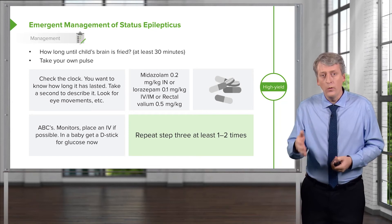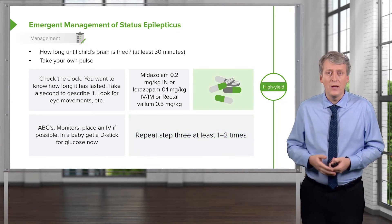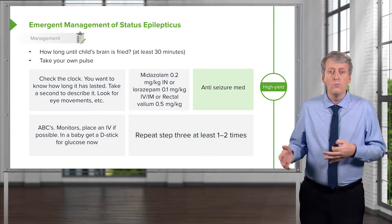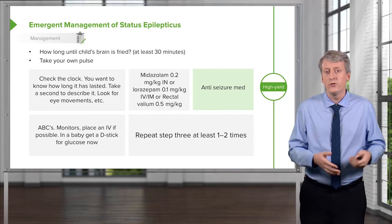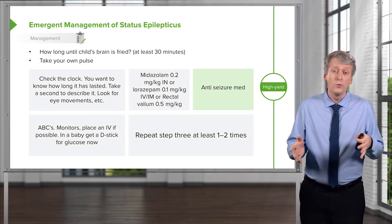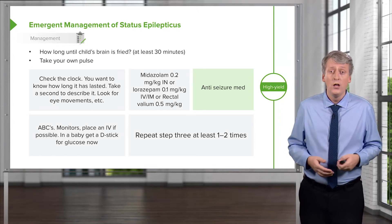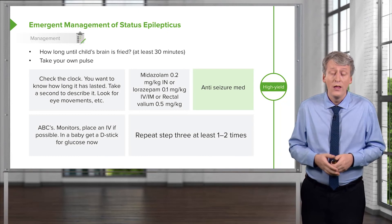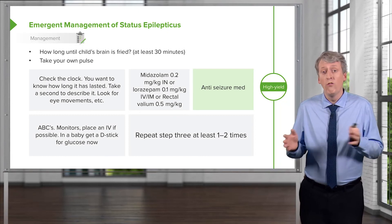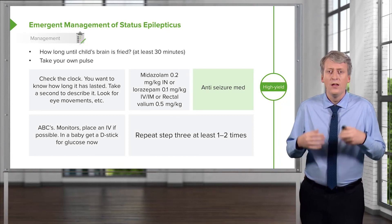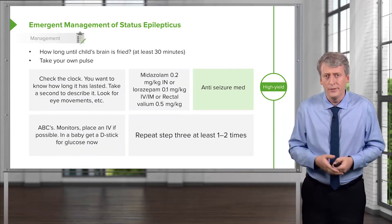After multiple administrations of benzodiazepines, we may choose to move on to an anti-seizure medication. In children under 1, we would do phenobarbital, and in children over 1, we usually start with something like fosphenytoin.